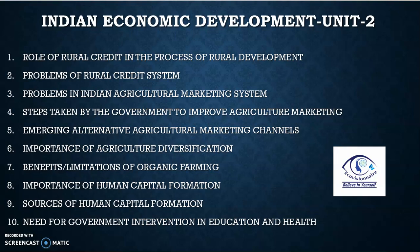What steps have been taken by the Government? Again, a very important topic to improve Agriculture Marketing. Emerging Alternative Agriculture Marketing Channels is also one of the steps taken by the Government. MSP and Regulated Markets are steps taken by the Government to improve the situation. And then comes Agriculture Diversification.